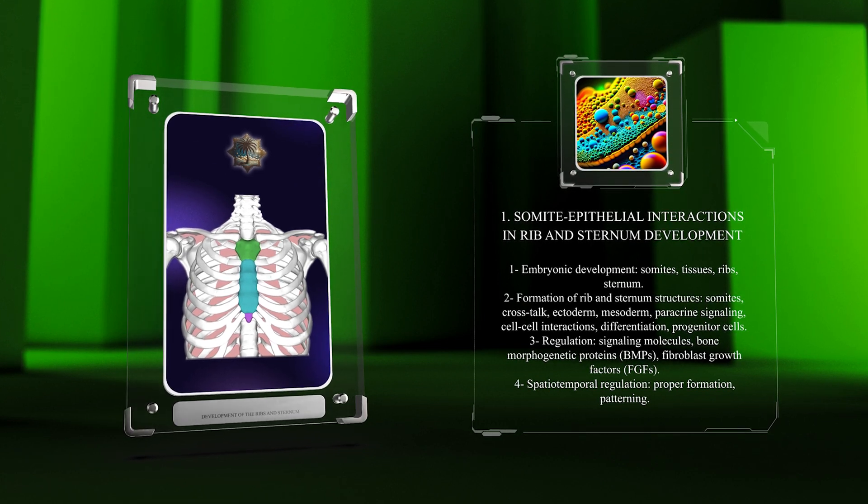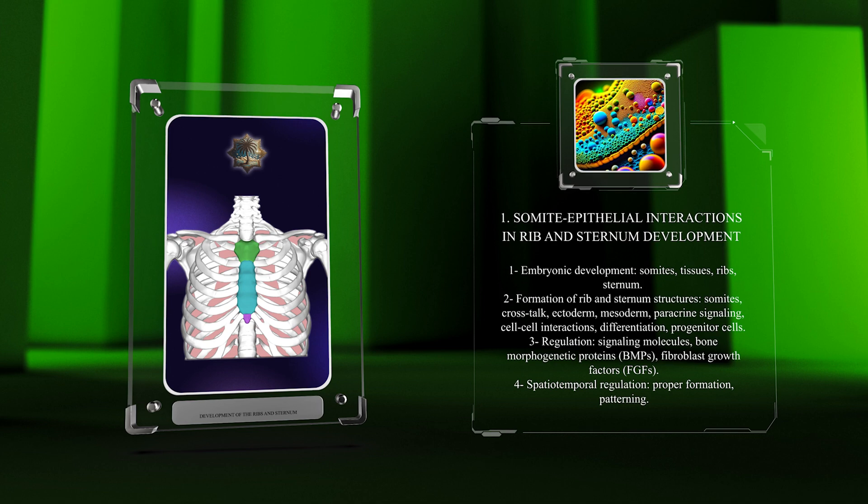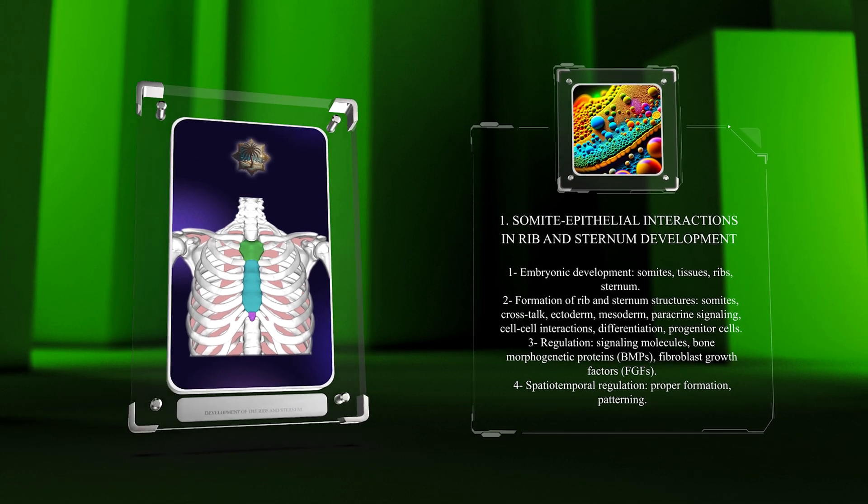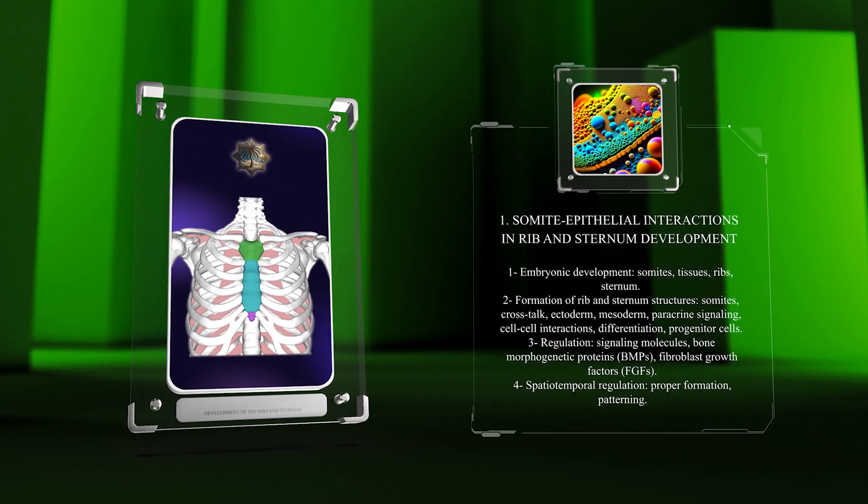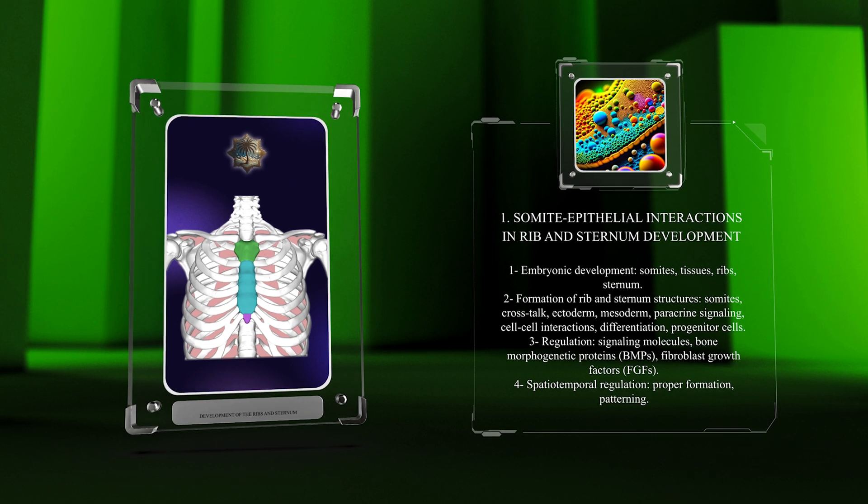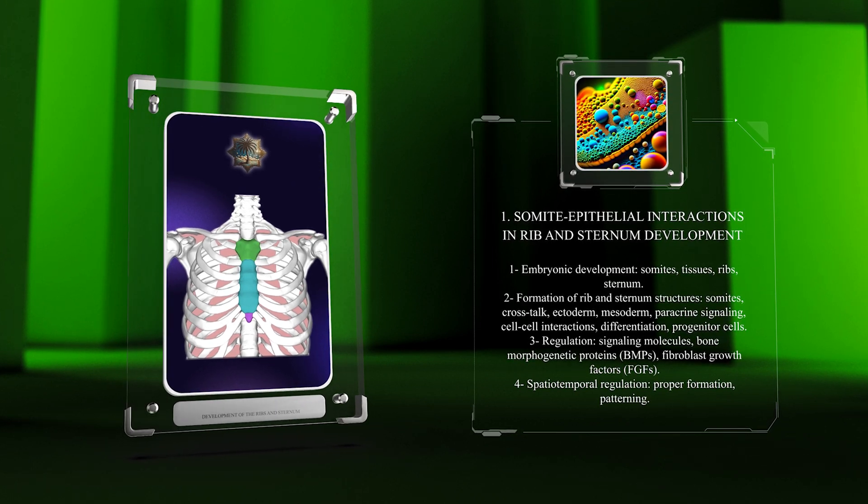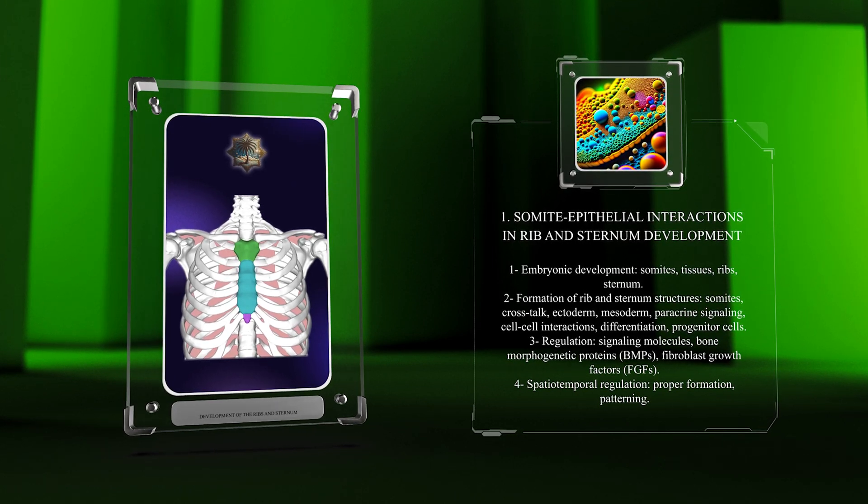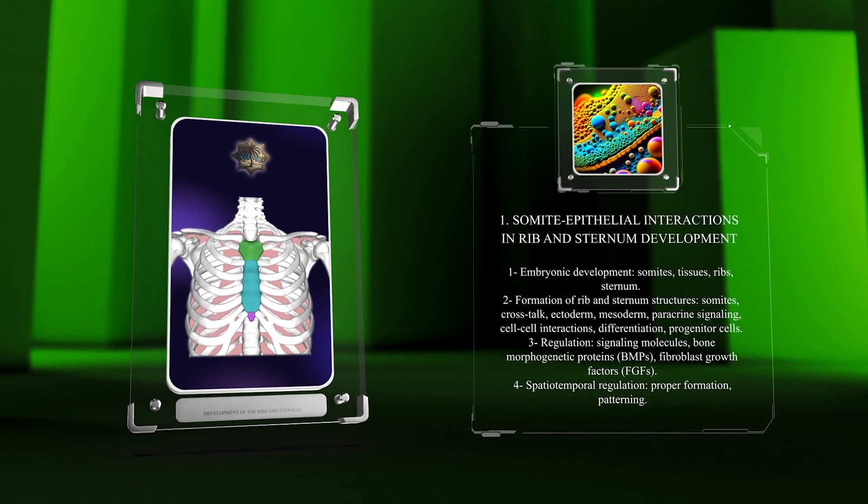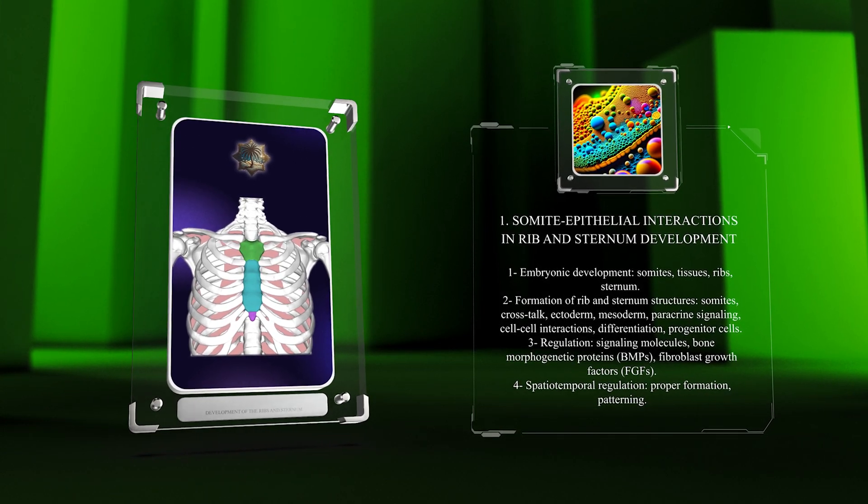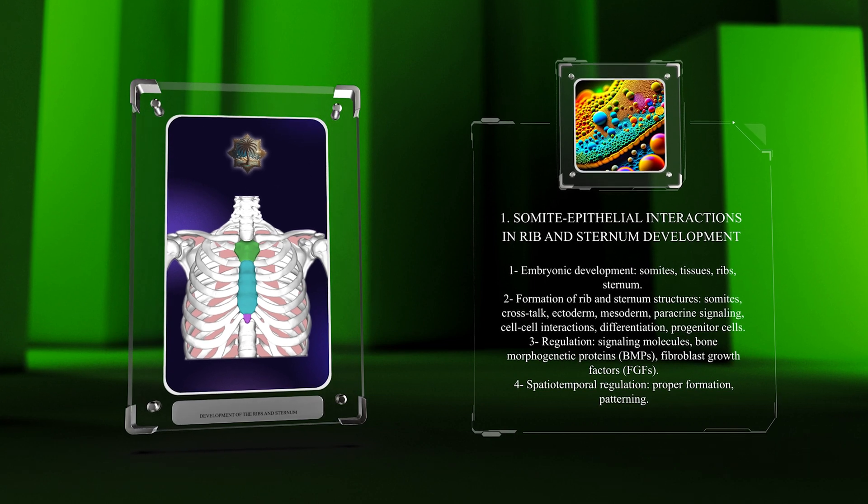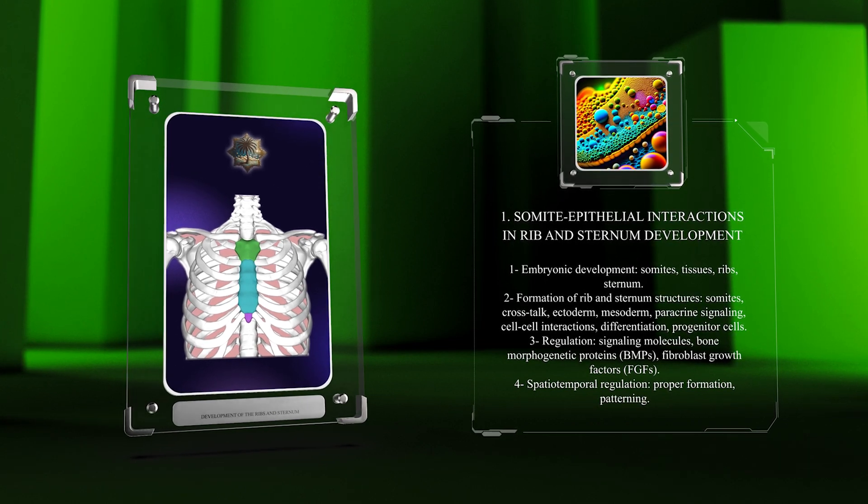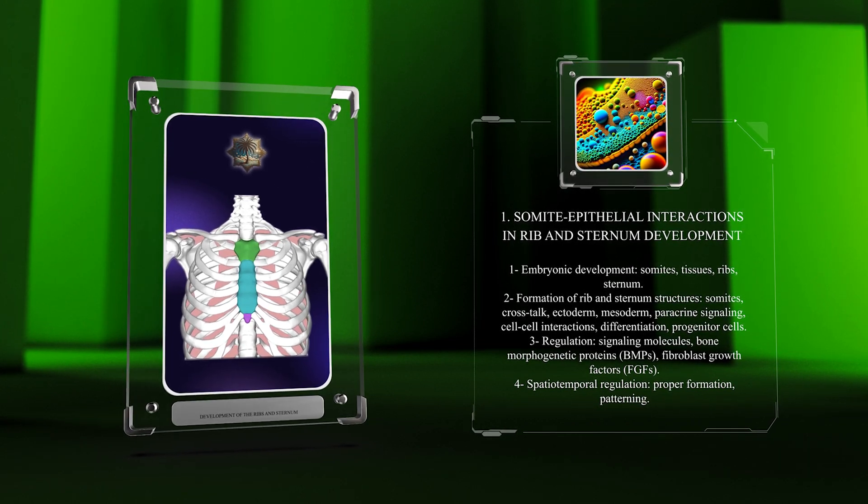Through paracrine signaling and direct cell-cell interactions, somites induce the differentiation of surrounding mesodermal cells into rib and sternum progenitor cells. This process is regulated by various signaling molecules such as bone morphogenetic proteins (BMPs) and fibroblast growth factors (FGFs). The precise spatiotemporal regulation of these interactions ensures the proper formation and patterning of the rib and sternum structures.